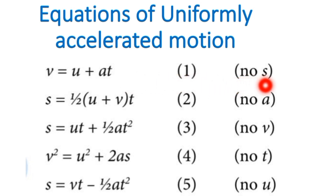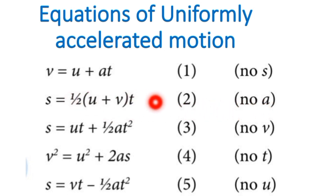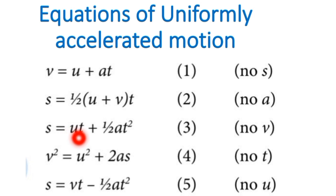The second equation gives displacement. Displacement is equal to 1 over 2, in brackets, initial velocity plus final velocity, times time. The third equation accounts for acceleration: displacement is equal to initial velocity times time plus 1 over 2 acceleration times time squared.